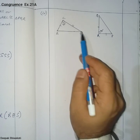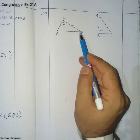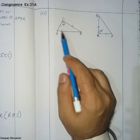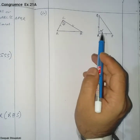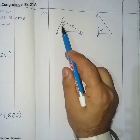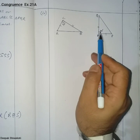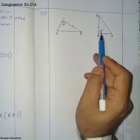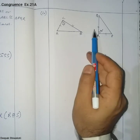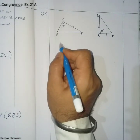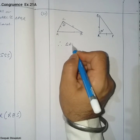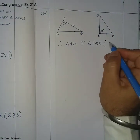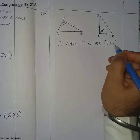Naming the triangles correctly is important — ABC and PQR are the corresponding triangles. Looking at these two figures, the included angle lies between two equal sides, so these two triangles are congruent by the SAS rule — Side Angle Side. Therefore, triangle ABC is congruent to triangle PQR by SAS.